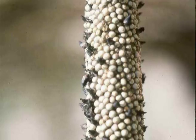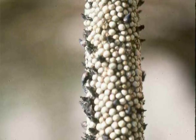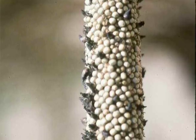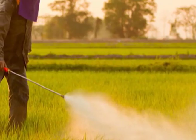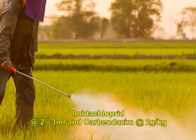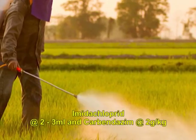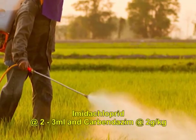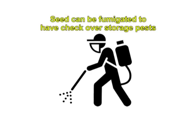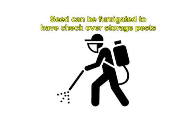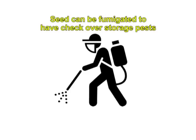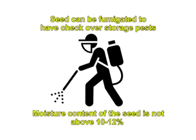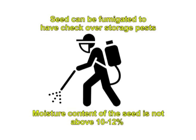The seeds are infested with several storage pests. To protect seeds against these pests and storage fungal buildup, seeds are given a protective treatment with imidacloprid at 2 to 3 ml and carbendazim at 2 g per kg of seed, as slurry treatment or film coating with polymers. As a prophylactic measure, seeds can be fumigated to check storage pests. Before fumigation, it must be ensured that the moisture content of the seed is not above 10 to 12%, as higher moisture may interfere with seed germination quality.